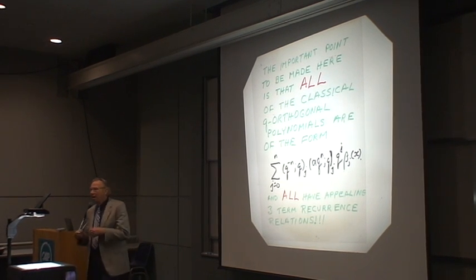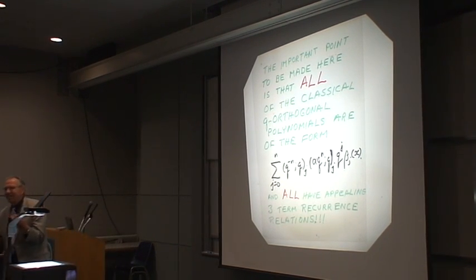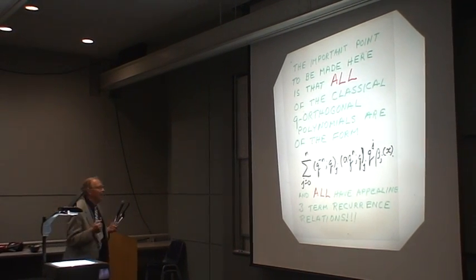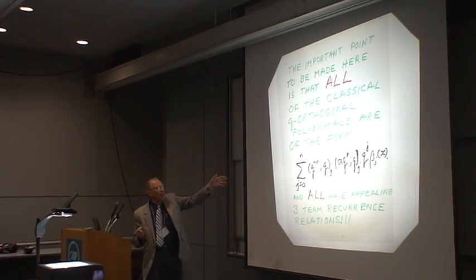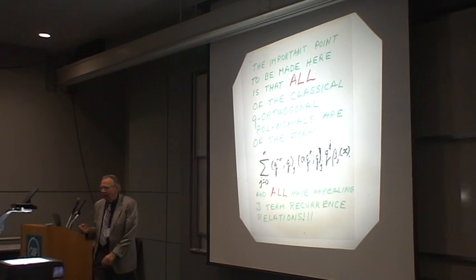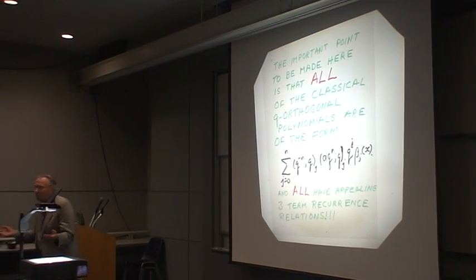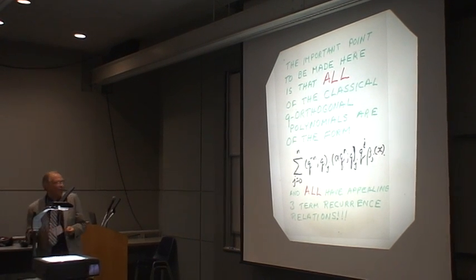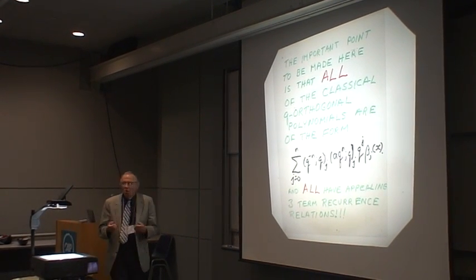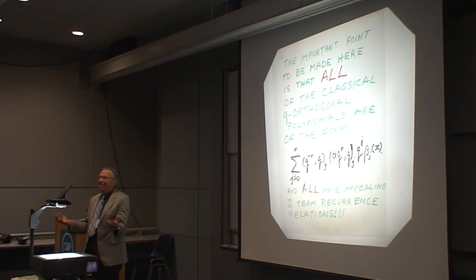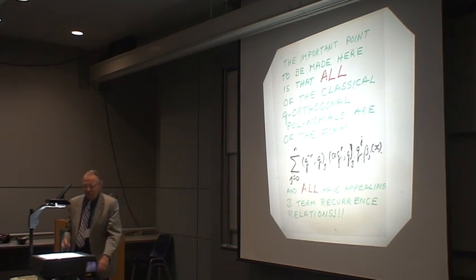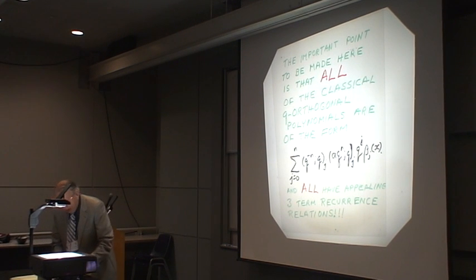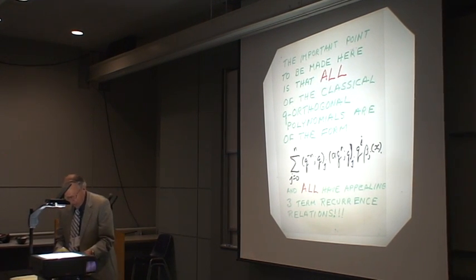So the thing to stress here is, classically, what one has been looking at is instances of this series in black where the betas satisfy a two-term recurrence relation. In other words, the betas are some sort of finite product. But what's the next thing up? The next thing up is a three-term recurrence relation, and basically there are a variety of such polynomials.